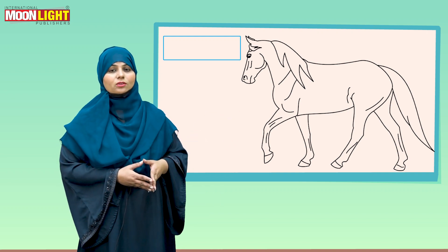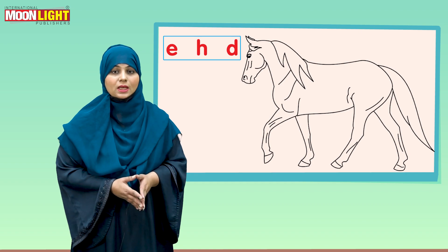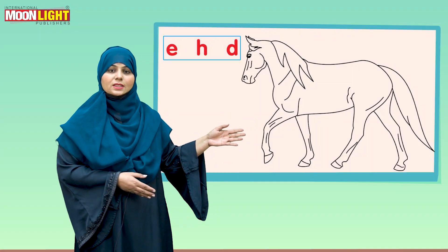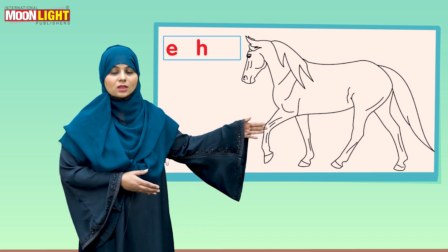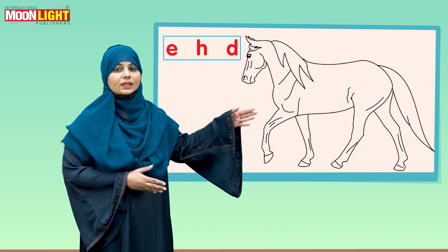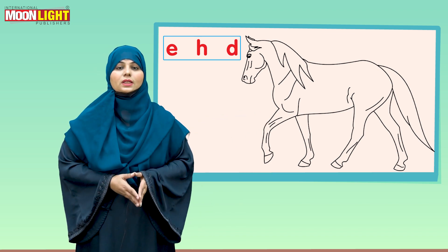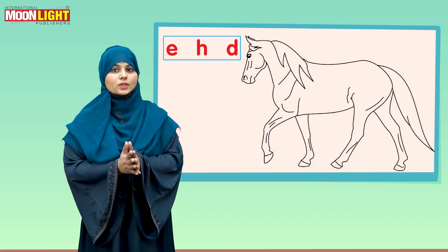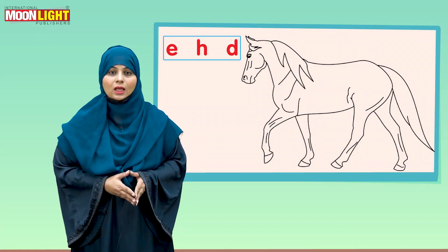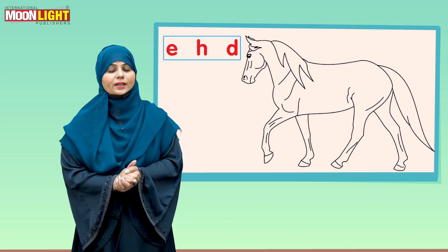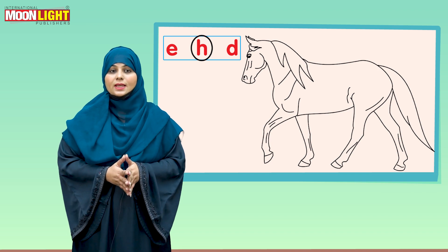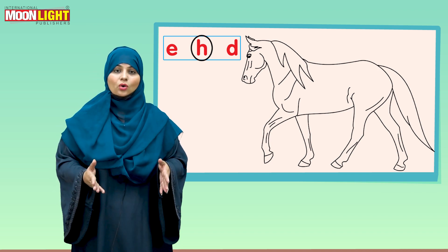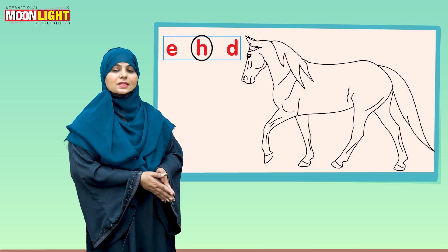Look at this picture — this is the picture of goat. Now look below; there are three letters. The first one is G, the second one is A, and the third one is I. We are going to encircle G. Now encircle letter G.